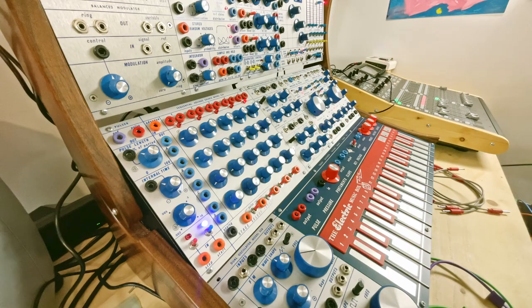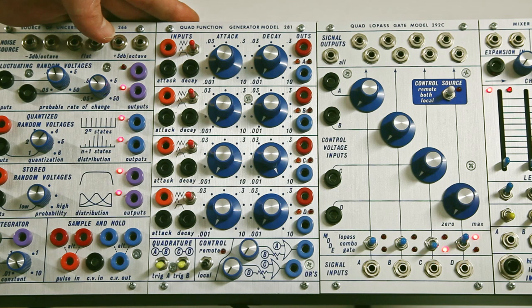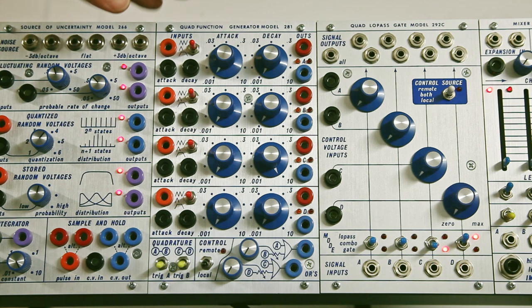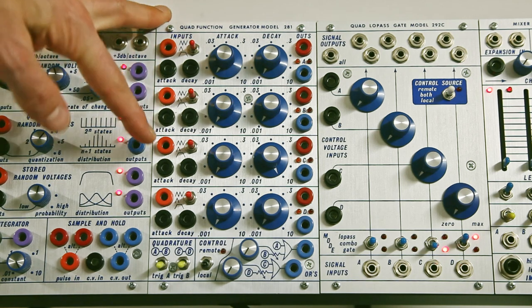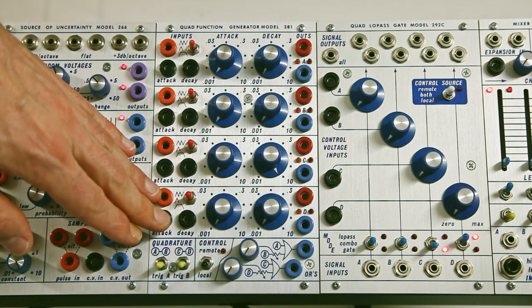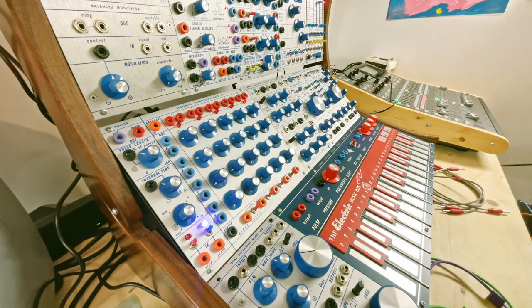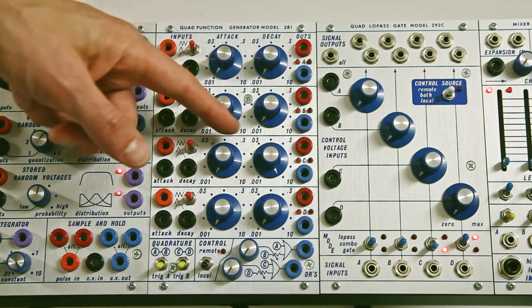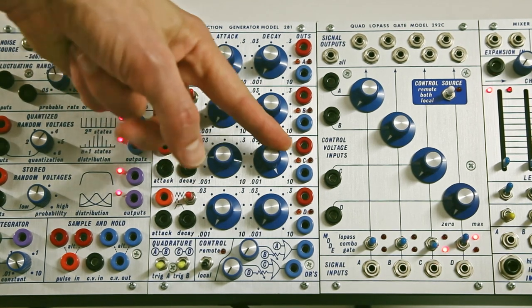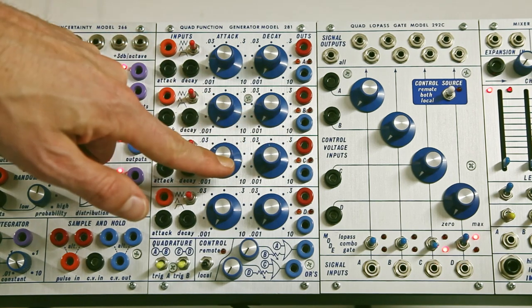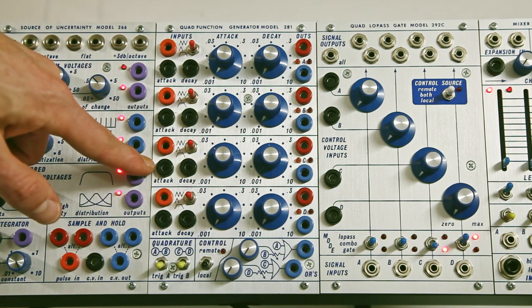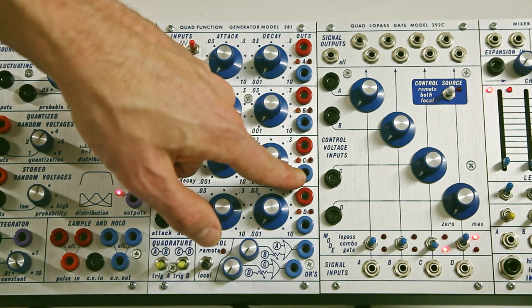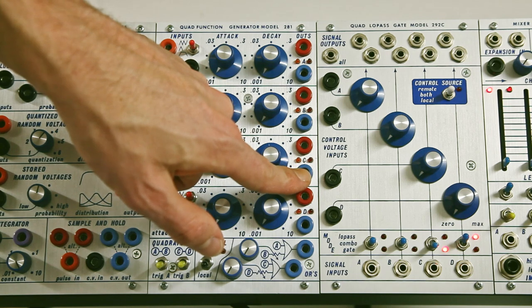So what is the 281? The 281 is at the heart of modulation in the 200 series. It's made of four function generators. They are all identical. Each function has an attack and decay value that you can set using these two knobs and that you can control using these CV inputs. And you get your function at this CV output.